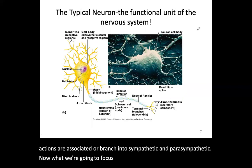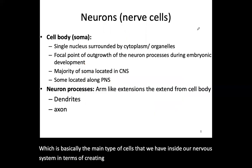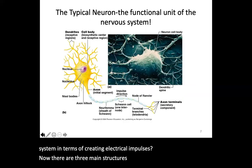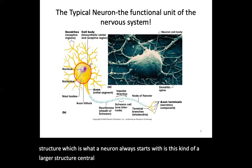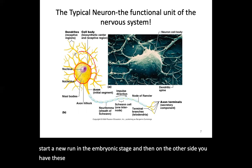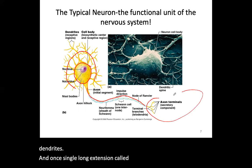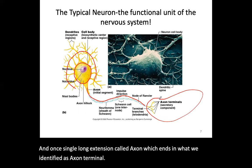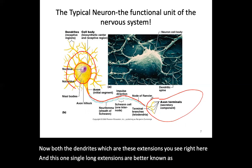Now we'll focus on the structure of neurons, which are the main cells in our nervous system responsible for creating electrical impulses. There are three main structures within your neuron: the cell body or soma, which is the larger central structure; dendrites, which are many extensions coming off the cell body; and one single long extension called the axon, which ends in the axon terminal. Both the dendrites and axon are known as processes that originate from the cell body.